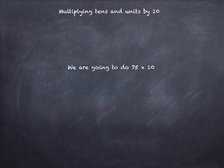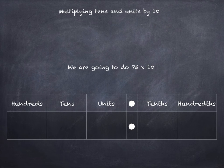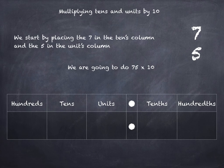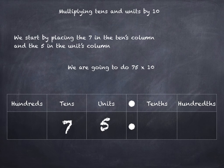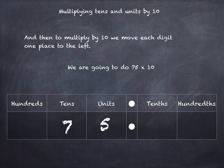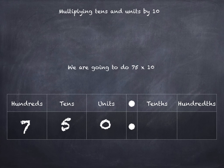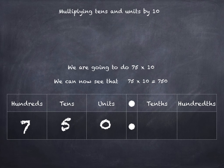So we're going to do 75 times 10. There's our grid and we're going to pop the 7 into the tens column and the 5 into the units column — 75. We're multiplying by 10, so we're going to move both of those digits one place each to the left. Now we're going to need a zero placeholder in the units column, and then we can see that 75 times 10 is 750.